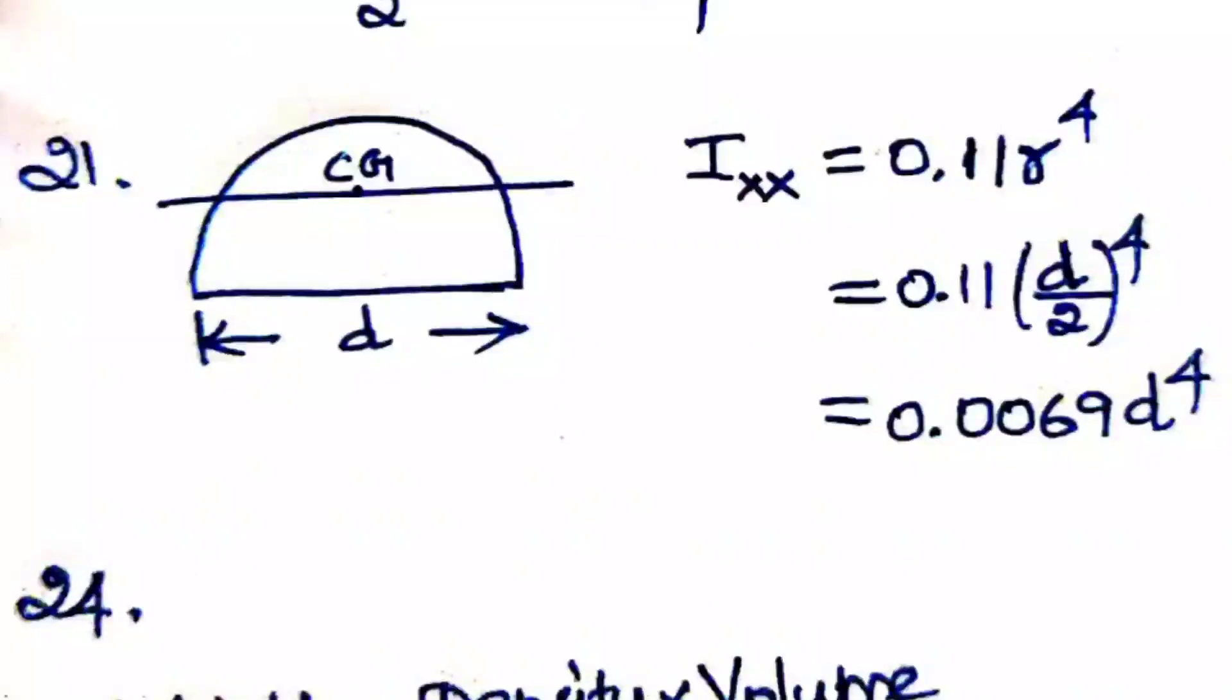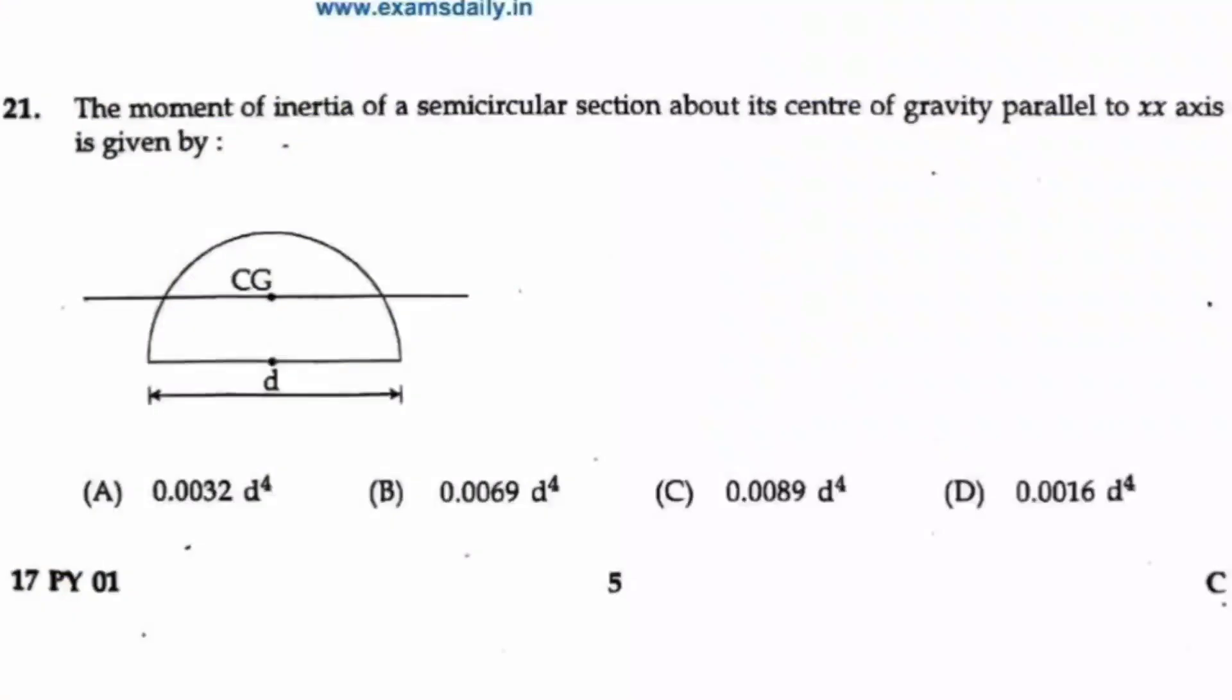Now in the question, they have given it in terms of D, so we have to convert it to D. We substitute D/2 instead of r, and you will get the value as 0.0069D⁴. So option B is your right answer.